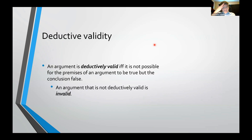The first concept we'll look at is deductive validity. An argument is deductively valid if and only if it's not possible for the premises of the argument to be true but the conclusion be false. So if the premises are all true, then the conclusion also has to be true — you can't have the premises all being true and the conclusion being false.